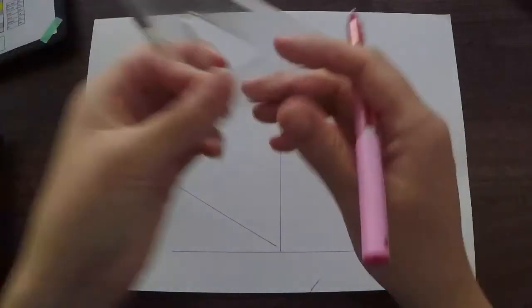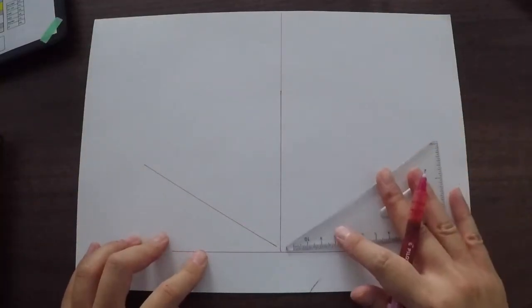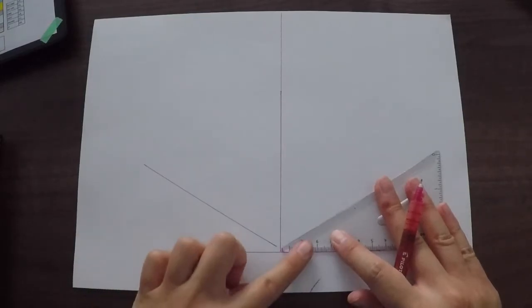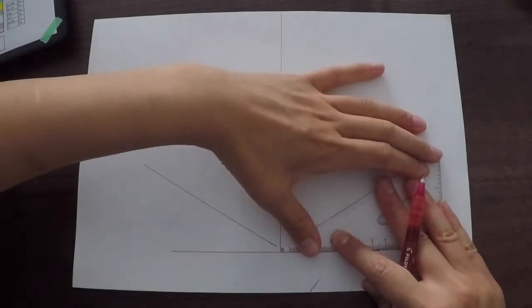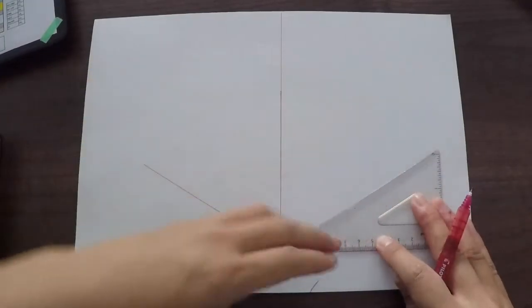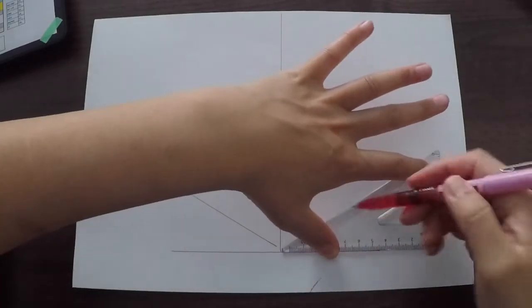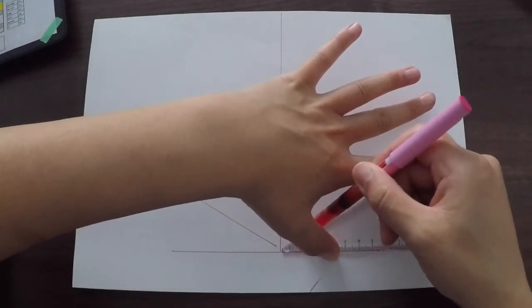And you repeat that and you just flip your set square over. Same thing. And again make sure you hold down your ruler and this way you can draw a nice line going across like this.